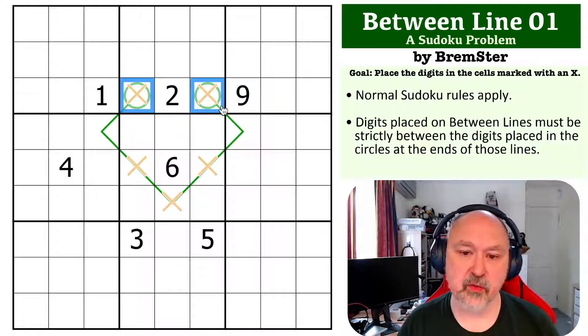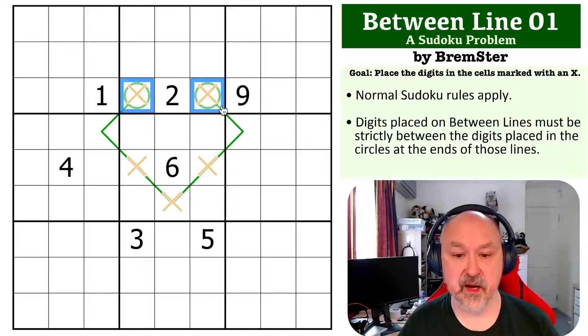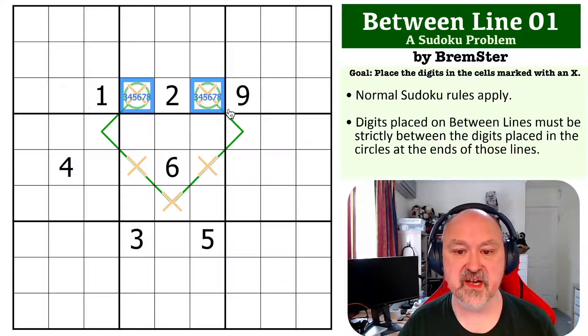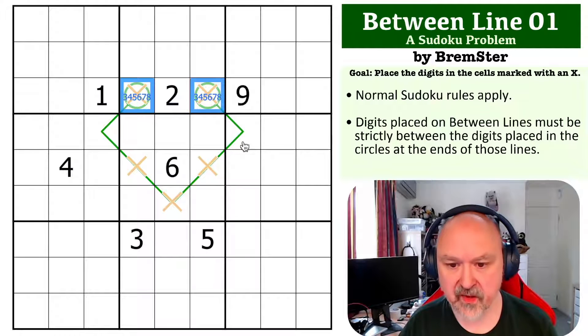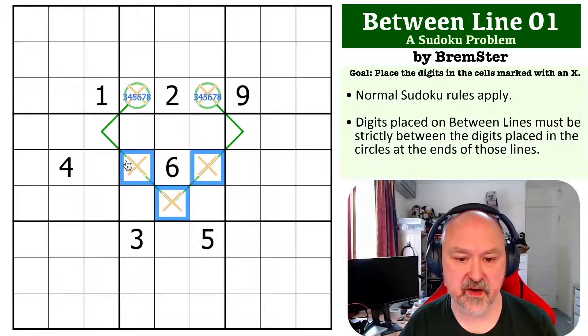If we look at these two, the digits that can go into the circles, we know that they can't be one, two or nine. So these can only be from three, four, five, six, seven or eight. These are the bounds of what could possibly go in the circles. Now, we don't have much information about these cells, but we do have a fair bit about these three.